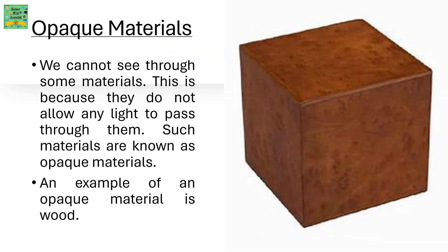Opaque materials: we cannot see through some materials. This is because they do not allow any light to pass through them. Such materials are known as opaque materials. An example of an opaque material is wood.